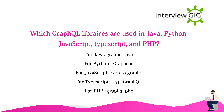Which GraphQL libraries are used in Java, Python, JavaScript, TypeScript, and PHP? For Java: GraphQL Java. For Python: Graphene. For JavaScript: Express GraphQL. For TypeScript: TypeGraphQL. For PHP: GraphQL PHP.